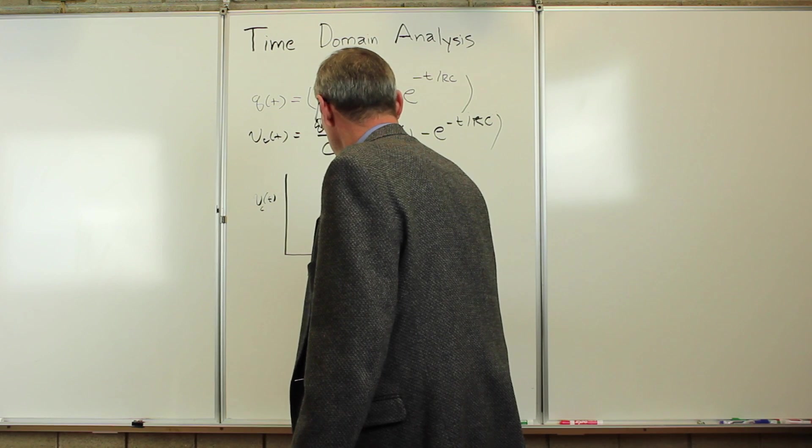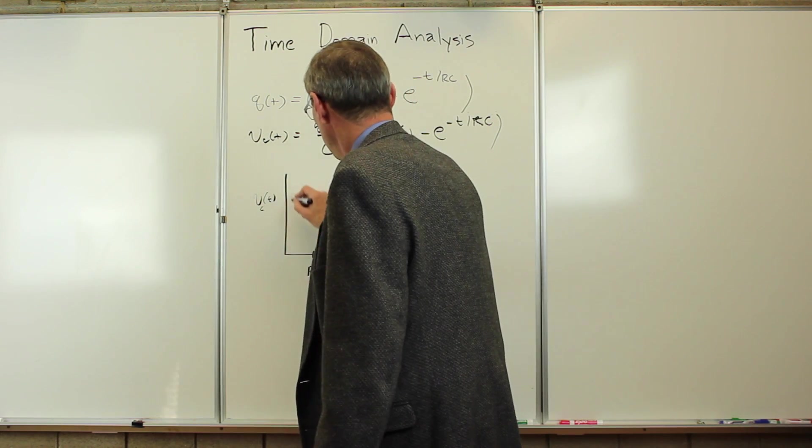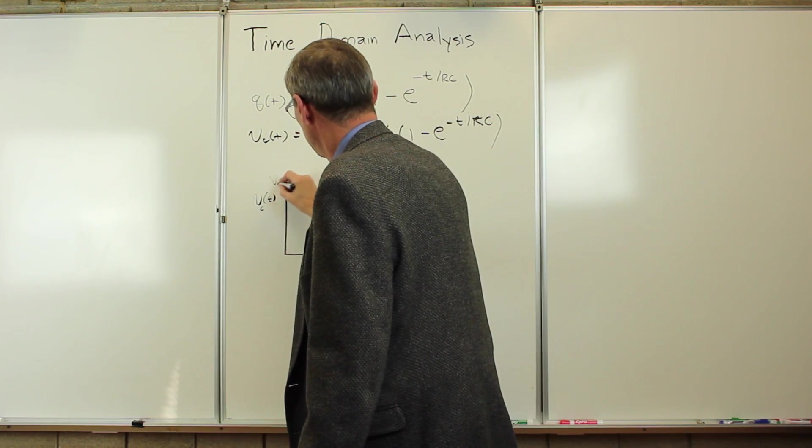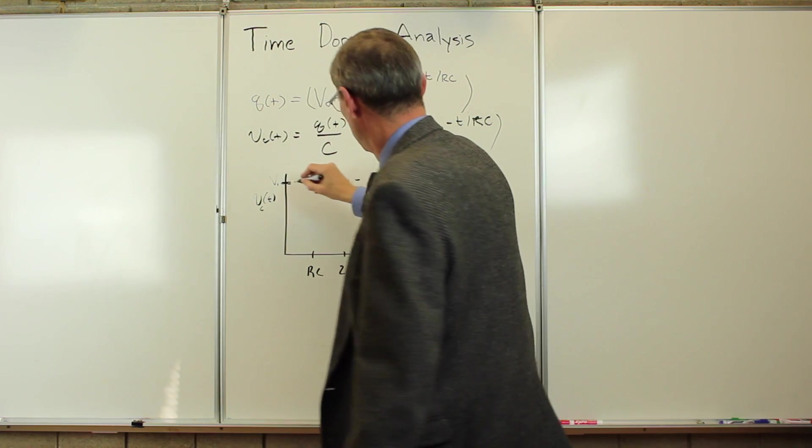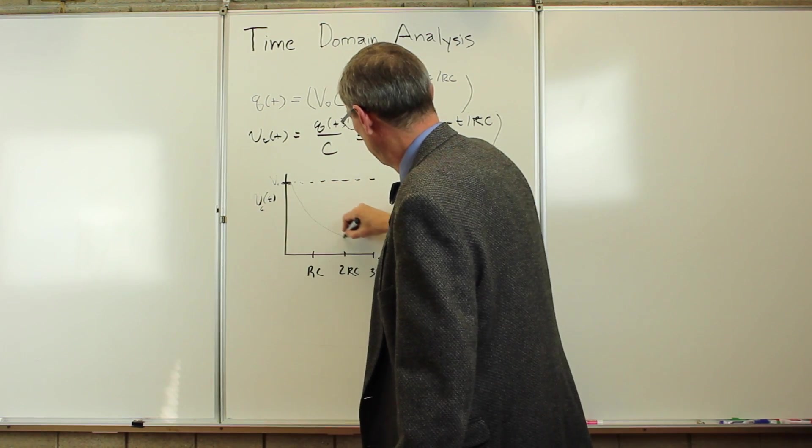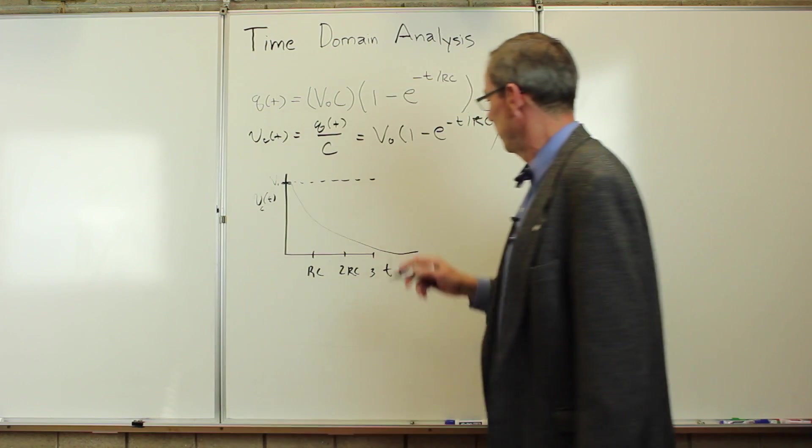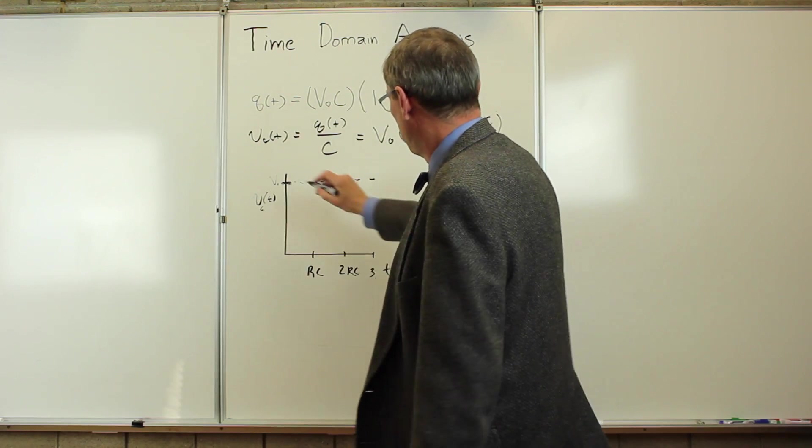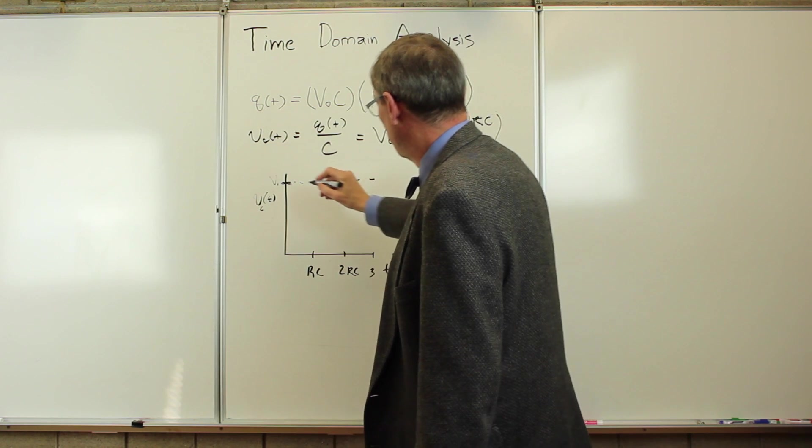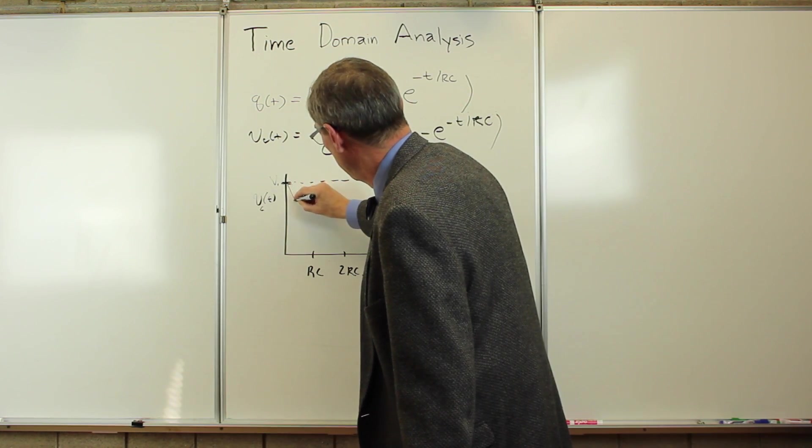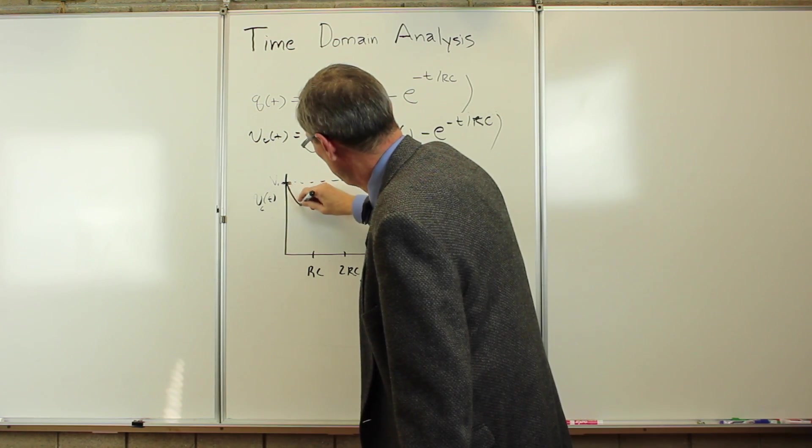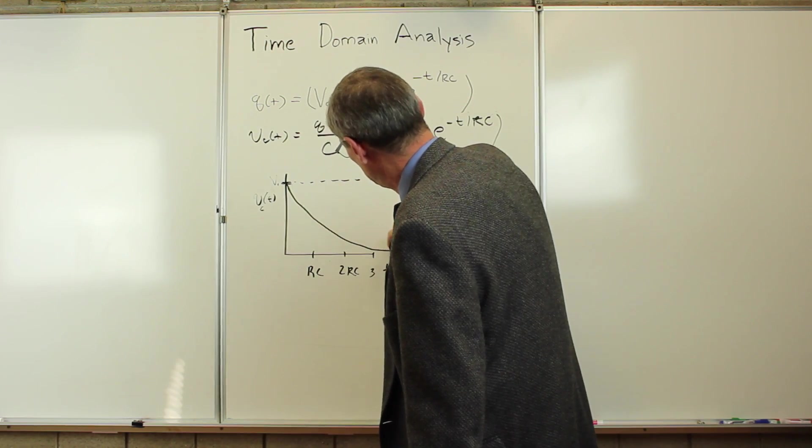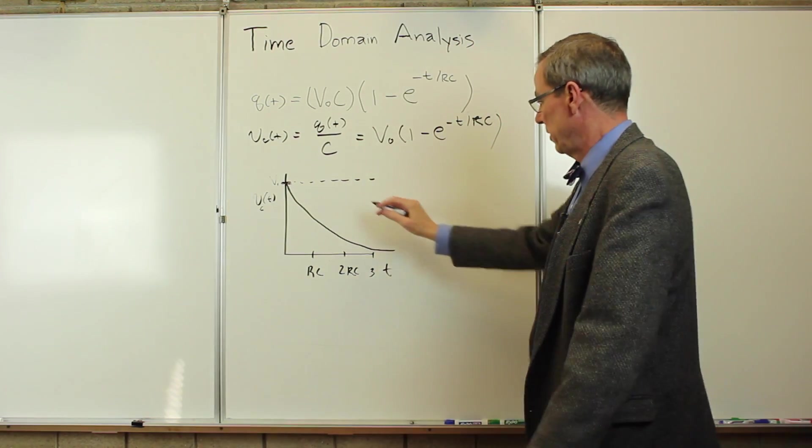So VC is a function of time, in units of RC, there's V0. It starts here and decays away exponentially with time. So there's the voltage across the capacitor. So it starts out at V0 at time t equals zero, and it decays away exponentially as a function of time.